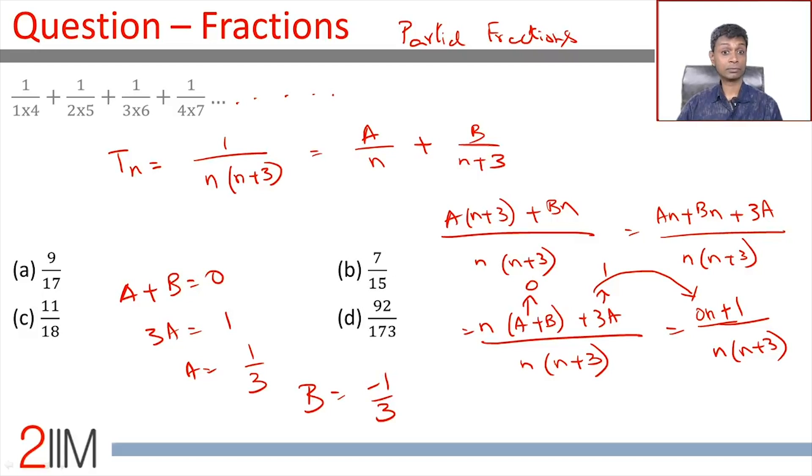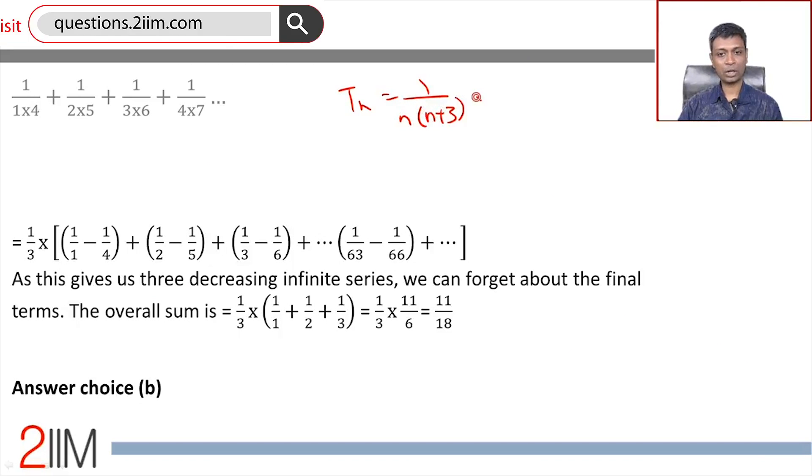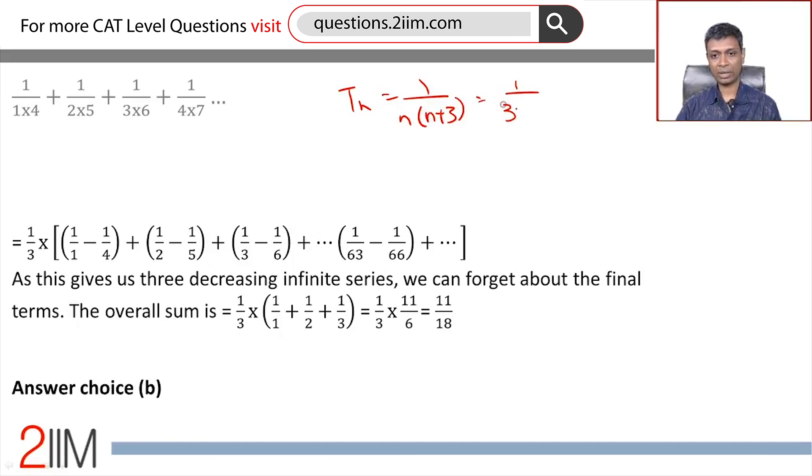We are practically done. The Tn here is 1/(n(n+3)). We can write this as 1/(3n) - 1/(3(n+3)). Or if we take out 1/3, this is 1/n - 1/(n+3).